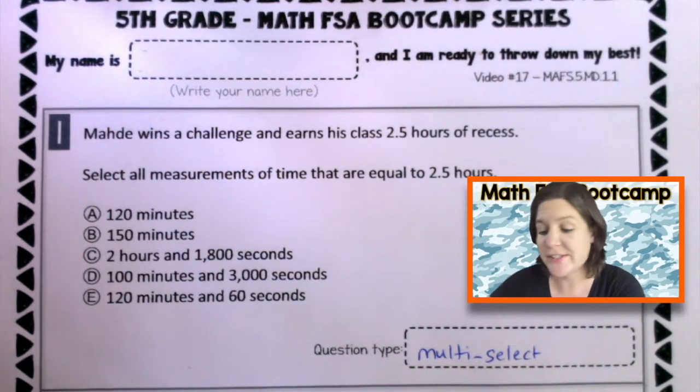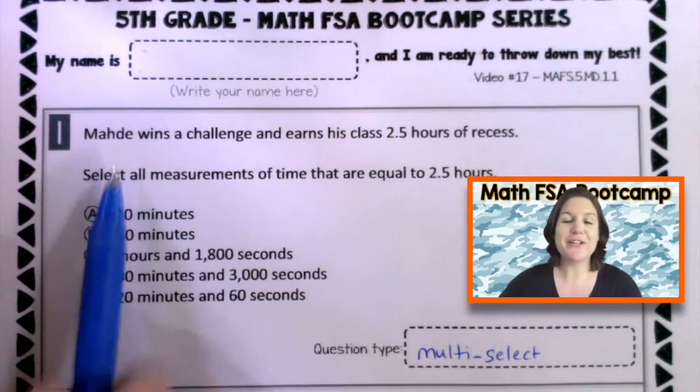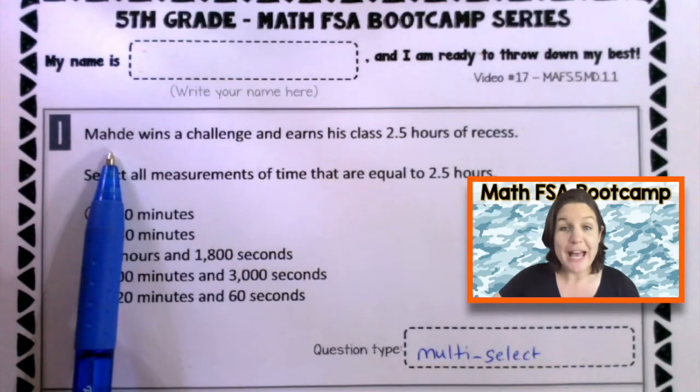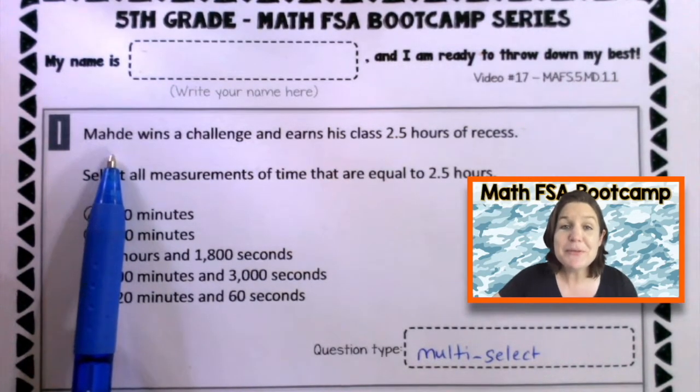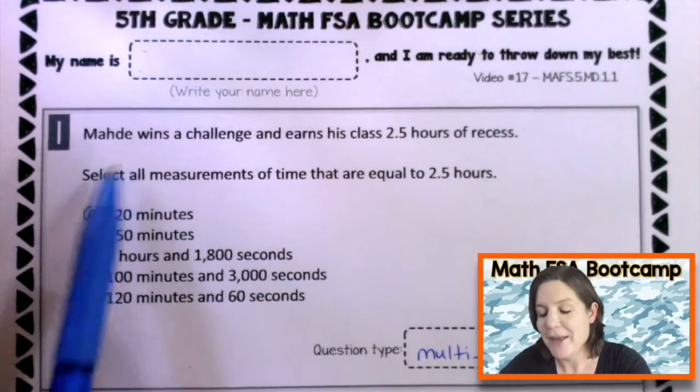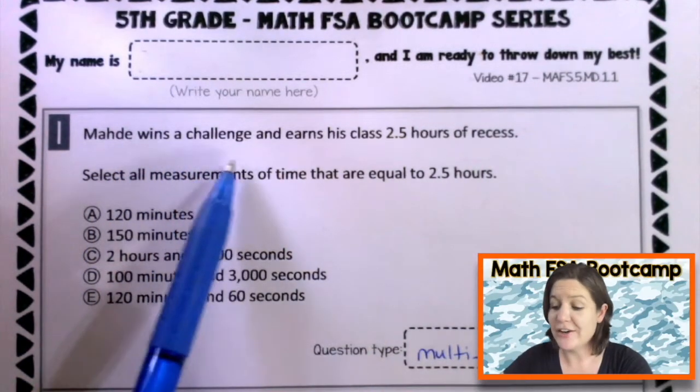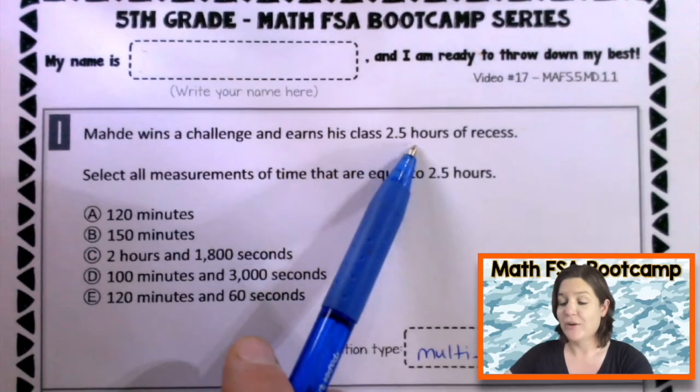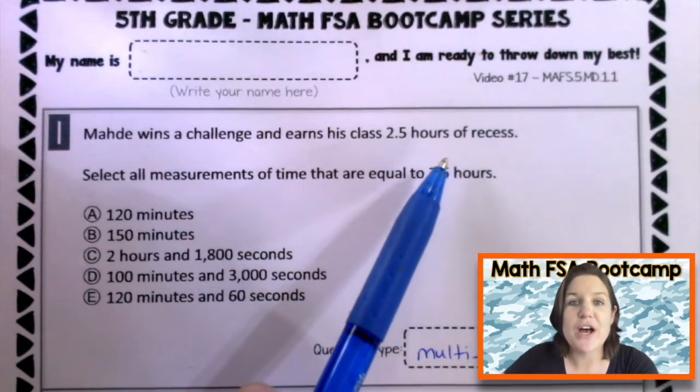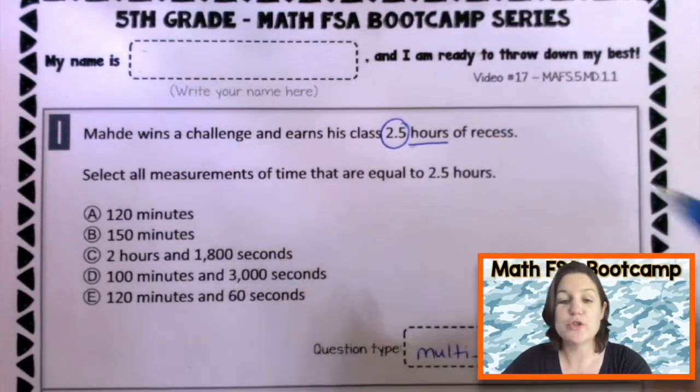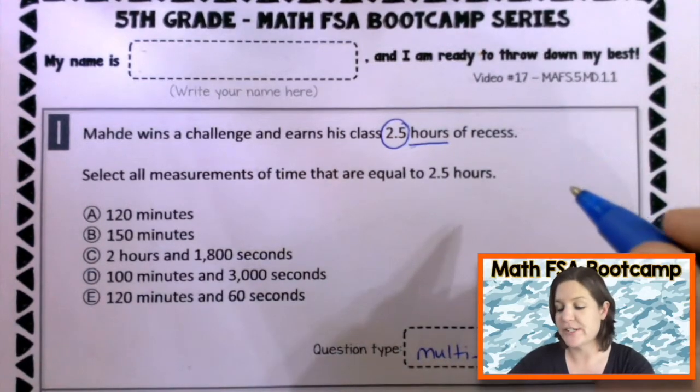Number one says, Maddie. A few months ago, I did a virtual classroom visit, and Maddie from Castleview asked, can I please be in one of your problems on one of your videos? So, Maddie, this one's for you, buddy. Maddie wins a challenge and earns his class two and five tenths, or two and a half, hours of recess. That is a good challenge there. Two and a half hours, or two and five tenths hours of recess.